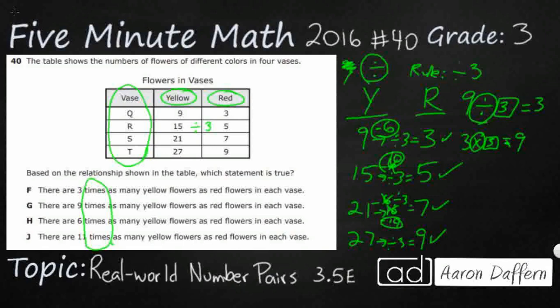There are three times, that's going to be a multiplication, as many yellow flowers as red. So let me see if I can write what this says. Three times as many yellow flowers as red. So the yellow is three times as many yellow as red. Well, that actually looks like it might work.